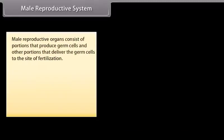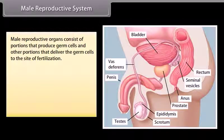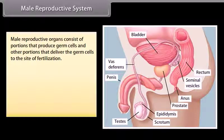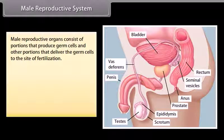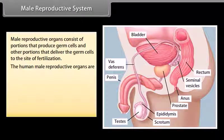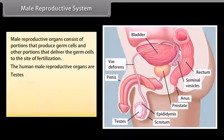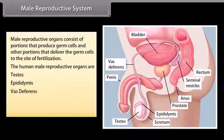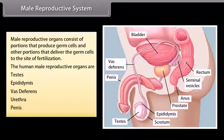Male reproductive organs consist of portions that produce germ cells and other portions that deliver the germ cells to the site of fertilization. The human male reproductive organs are: testes, epididymis, vas deferens, urethra, and penis.